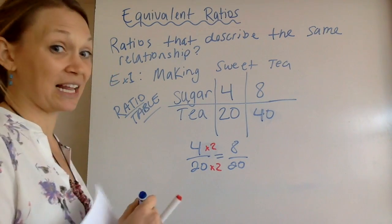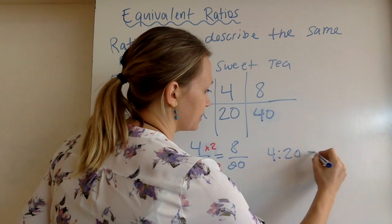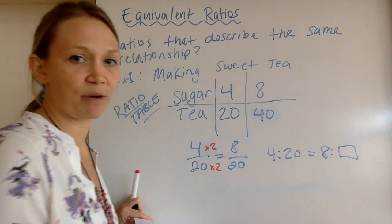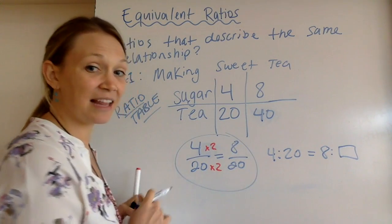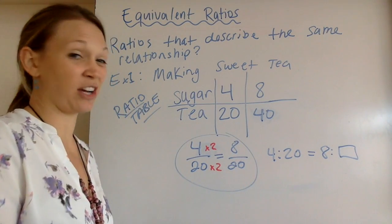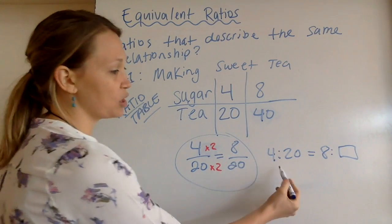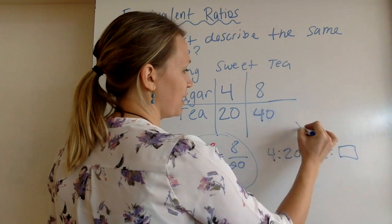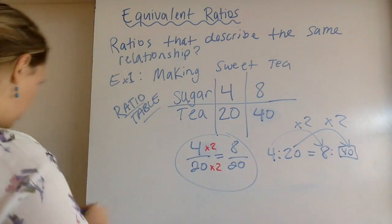You may also see it written like this. 4 to 20 is equal to 8 to what? And they may give you a question mark, a fill in the blank. I like writing things like fractions, because fractions, I know, and fractions are easy. And you might want to just, when you're doing this in your notebook, turn this into the fraction format. So it's really easy to see. Double this. Then I need to double this. 40.